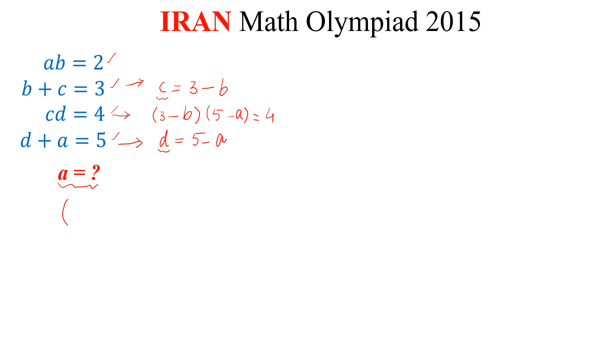We want to simplify this equation. 3 minus B times 5 minus A equals 4. So, 3 times 5, 15 minus 3A minus 5B plus AB equals 4. From here, AB equals 2. So, we put the value of AB equals 2. 15 minus 3A minus 5B plus 2 equals 4.